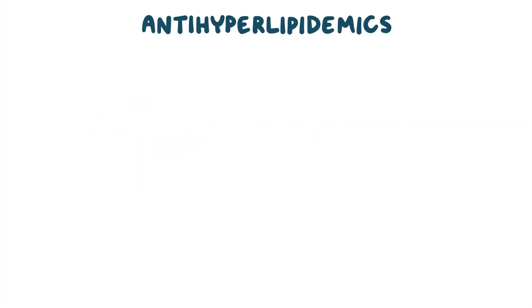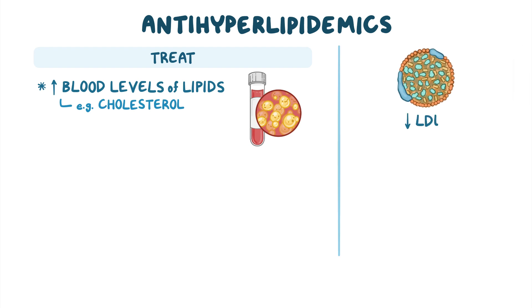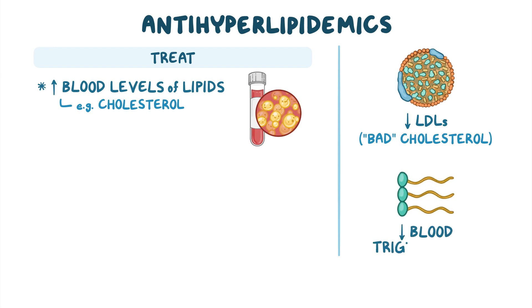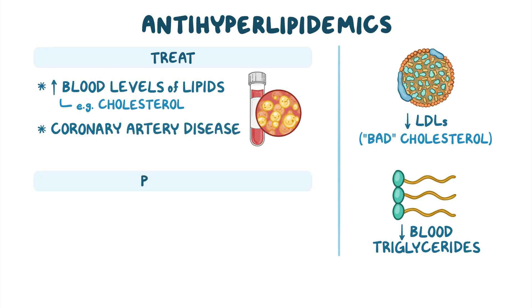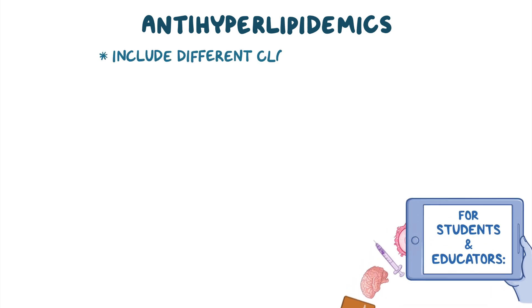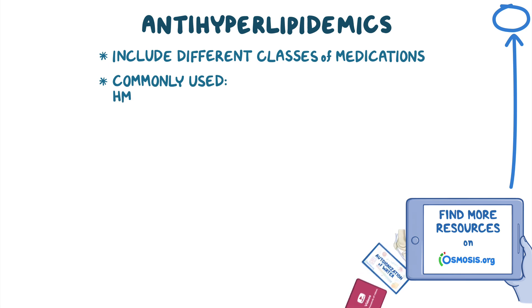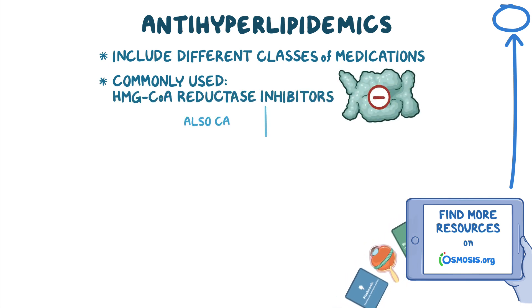Anti-hyperlipidemics are medications used to treat clients with increased blood levels of lipids like cholesterol by decreasing the levels of low-density lipoproteins or LDLs, sometimes referred to as bad cholesterol. They can also decrease blood triglycerides and are indicated to treat clients with coronary artery disease and prevent myocardial infarction. Anti-hyperlipidemics include different classes of medications, among which some of the most commonly used are HMG-CoA reductase inhibitors, also called statins.